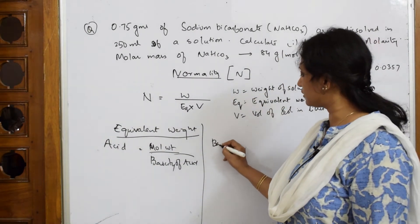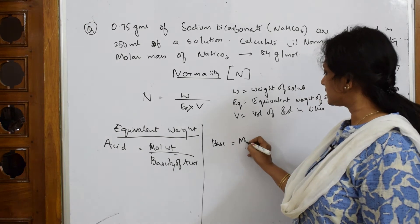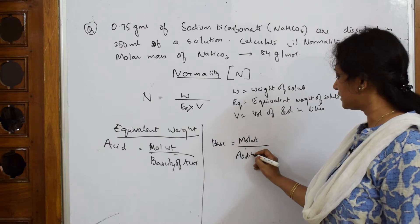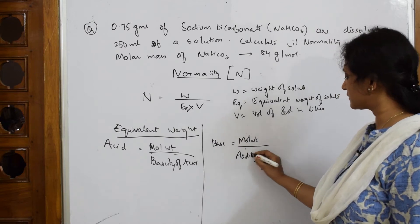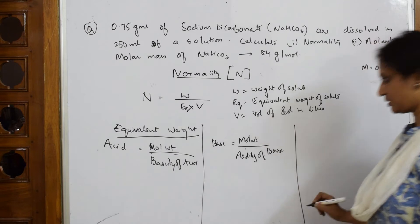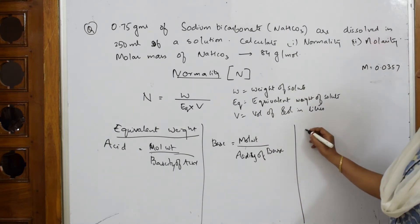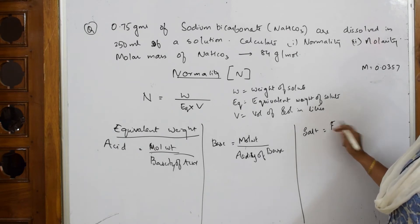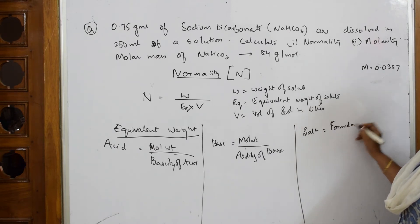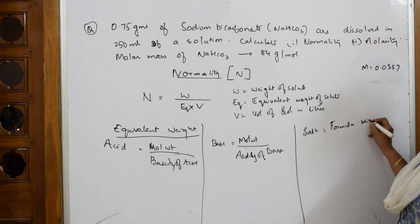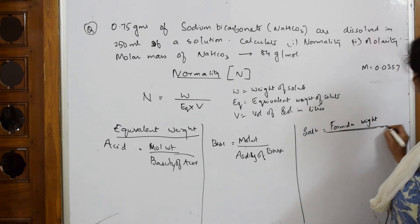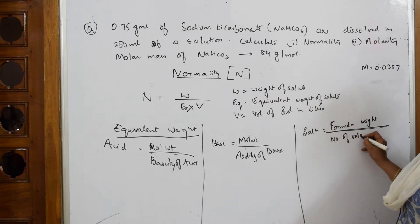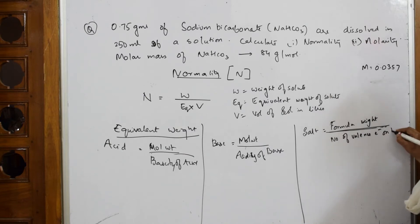For a base, equivalent weight = molecular weight of the base divided by acidity of the base. For a salt, we use formula weight divided by the number of valence charges on the metal atom.